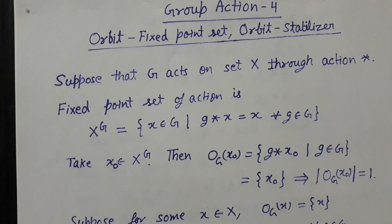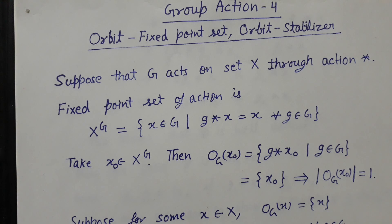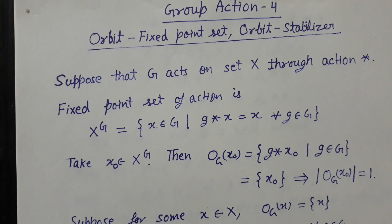Welcome to the fourth lecture on group action. In this lecture we will discuss the relation between orbit and fixed point set, and orbit and stabilizer. Before going through this lecture, it is desirable that you go through lectures group action one, group action two, and left coset and right cosets.